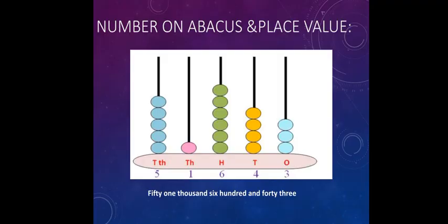Next, number on abacus and place value. The example number is 51,643. By using place values, the ones place is 3, so we have drawn 3 beads in the ones spike.